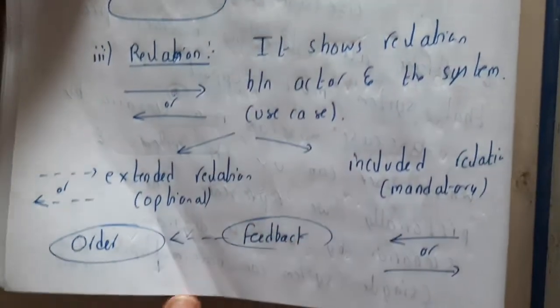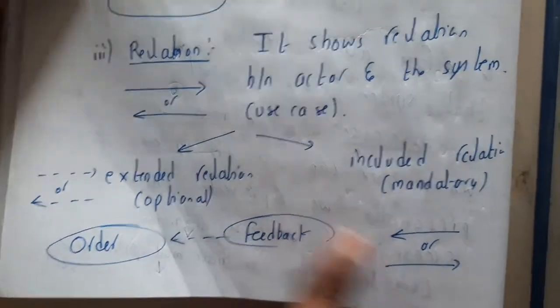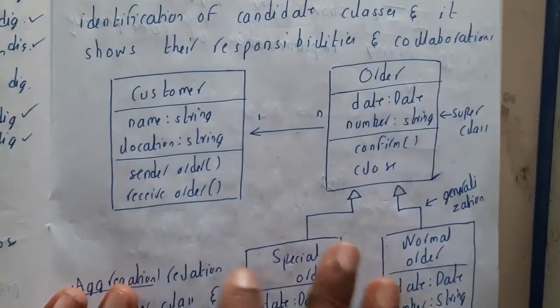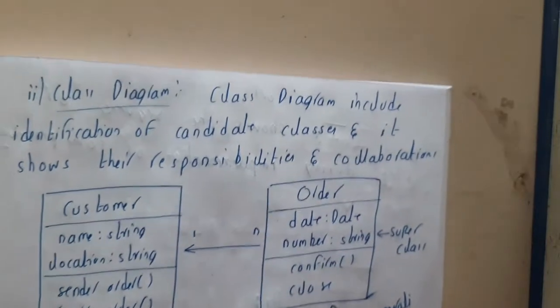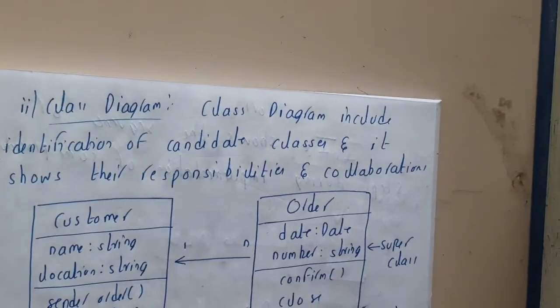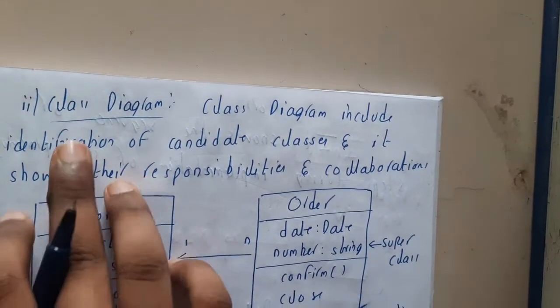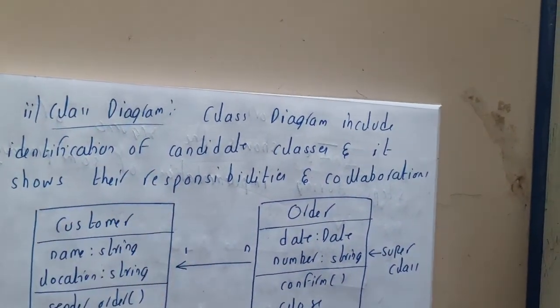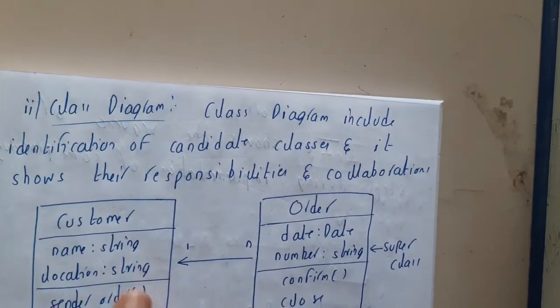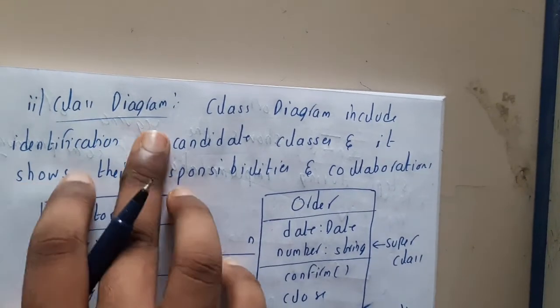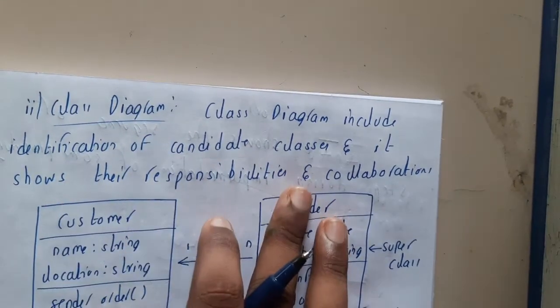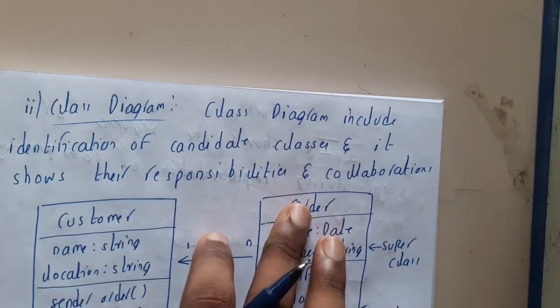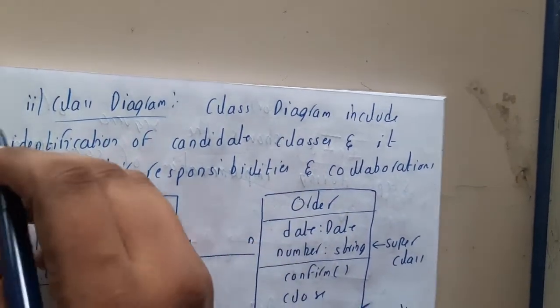We'll be discussing these things in detail in the next unit — how and what everything is and how we use it. This unit is just a basic introduction, so don't worry about that. Similarly, we are also having class diagrams, which we'll cover in the next unit.